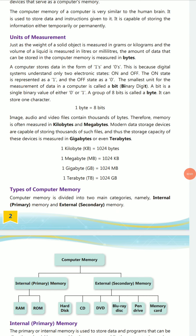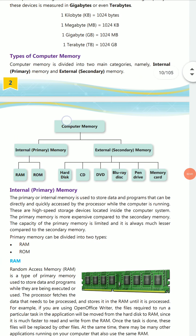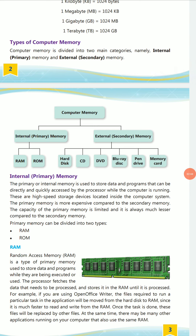Memory is measured in kilobytes and megabytes. Modern data storage devices have the capability of storing thousands of such files. Nowadays, we have hard disks where we can store 2 TB or 4 TB of data. The memory units are: 1 kilobyte (KB) = 1024 bytes, 1 megabyte (MB) = 1024 KB, 1 gigabyte (GB) = 1024 MB, and 1 terabyte (TB) = 1024 GB.